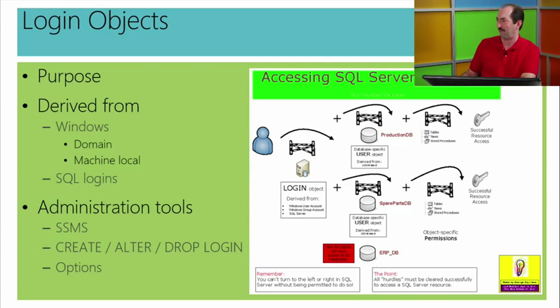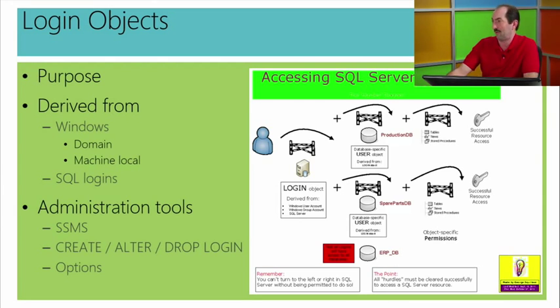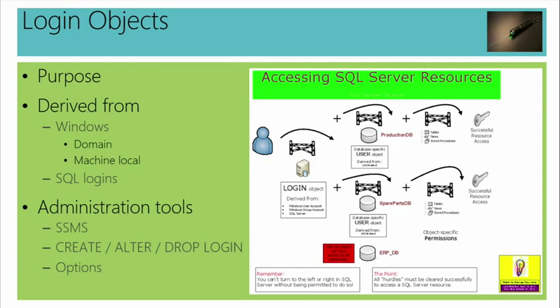Think of it as clearing three separate hurdles. First, you have to knock at the front door and furnish your identity — not only prove who you are, but show that you're invited to the party. We refer to this as authentication and authorization. Just as you wouldn't wander around a friend's house and look inside the medicine cabinet, once through the front door of SQL Server you may not be able to wander everywhere. Your login object, which permits access into SQL Server, must then be registered at the database level.